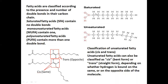Fatty acids can be classified as saturated and unsaturated. The carbon and hydrogen are held by single sigma bonds, and at the terminal they are attached to a carboxyl group. Fatty acids are classified according to the presence and number of double bonds in their carbon chain. Saturated fatty acids (SFA) contain only single bonds. Unsaturated can be monounsaturated (MUFA) — containing only one double bond — or polyunsaturated (PUFA) — containing more than one double bond in the chain.